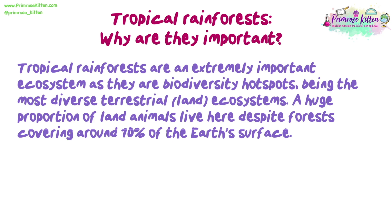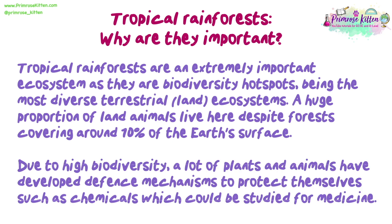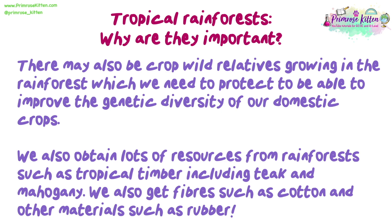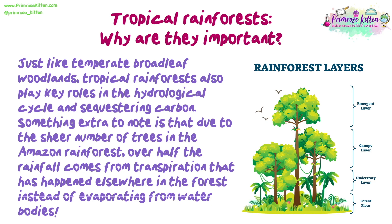Tropical rainforests are an extremely important ecosystem as they are biodiversity hotspots, being the most diverse terrestrial ecosystems. A huge proportion of land animals live here, despite forests covering around 10% of the earth's surface. Due to high biodiversity, many plants and animals have developed defence mechanisms such as chemicals which could be studied for medicine. There may also be crop wild relatives growing in the rainforest, which we need to protect to improve the genetic diversity of our domestic crops. We also obtain resources such as tropical timber including teak and mahogany, fibres such as cotton, and materials such as rubber. Like temperate broadleaf woodlands, tropical rainforests play key roles in the hydrological cycle and carbon sequestration. In the Amazon, over half the rainfall comes from transpiration that has happened elsewhere in the forest rather than evaporating from water bodies.